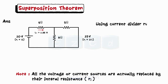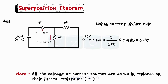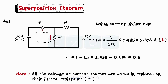Using the current divider rule, we can find the current flowing through the 6 Ohms resistor, which comes out to be 0.6764 Amperes. The current through the 5 Ohms resistor is the total current I minus the current through 6 Ohms, giving 0.811 Amperes. Note the directions of all currents.